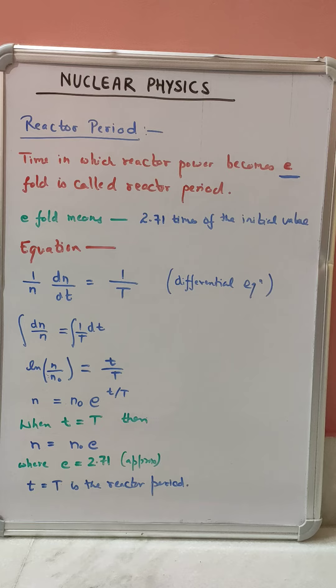So let's analyze this with the help of the equation. The neutron equation can be given as 1 by n dn by dt equals 1 by capital T. We will see the meaning of capital T later. This is a differential equation. Now rearranging the terms, we will get dn by n equals dt by capital T.